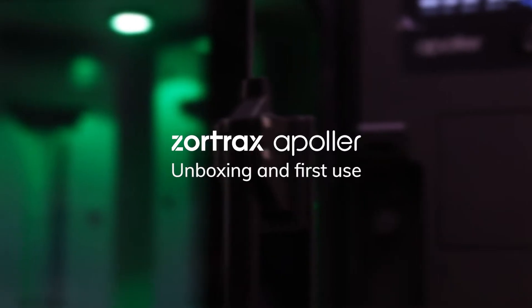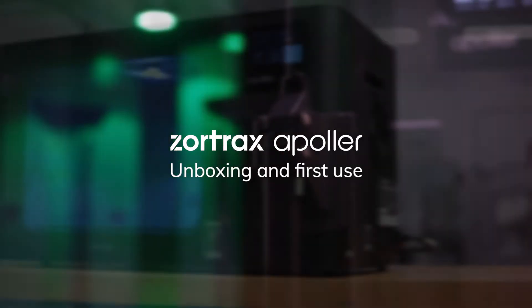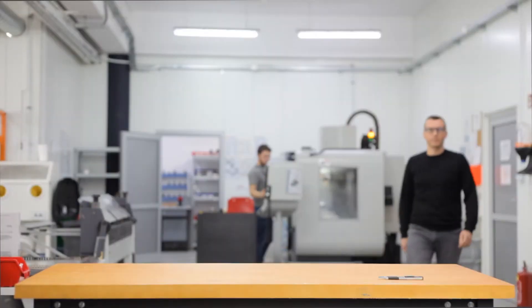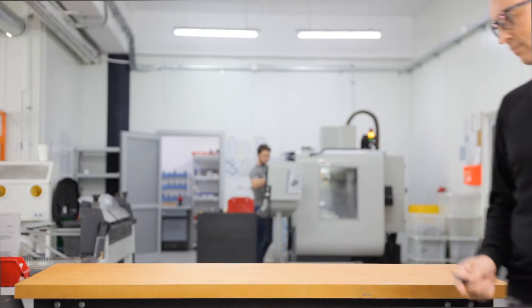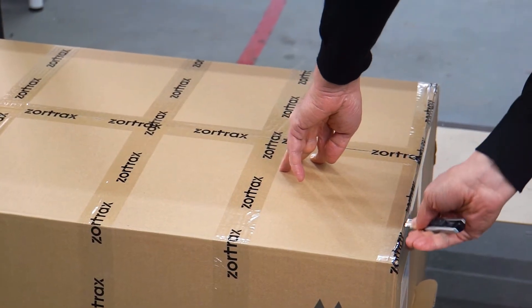Zortrax Apoller is a smart device that automatically smooths FDM 3D printed models with MEK or acetone vapors to remove visible layering. In this video, we'll guide you through unpacking and preparing the device for first use.